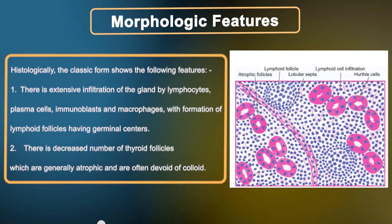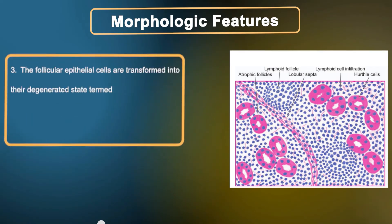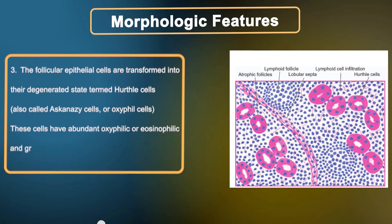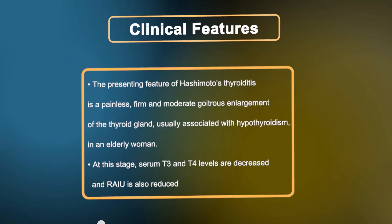There is a decreased number of thyroid follicles, which are generally atrophic and often devoid of colloid. The follicular epithelial cells are transformed into their degenerated state termed Hurthle cells, also called Askanazy cells or oxyphil cells. These cells have abundant oxyphilic or eosinophilic granular cytoplasm due to large numbers of mitochondria and contain large bizarre nuclei.